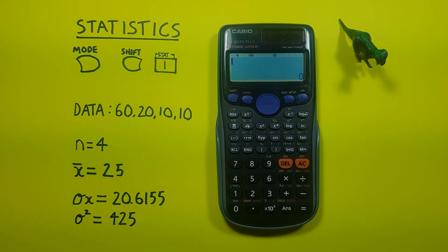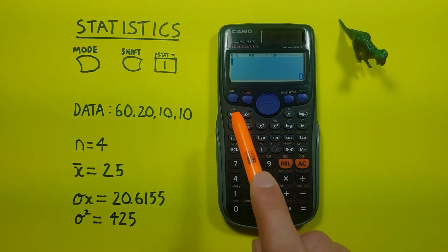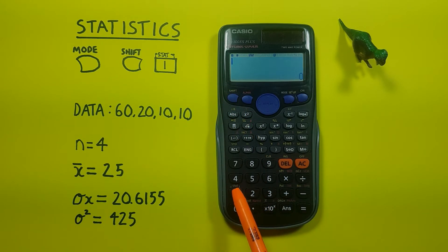Now we're ready to see some results. To do that, we press shift and then the 1 key with the shift function of stat. That'll bring us to this menu here.